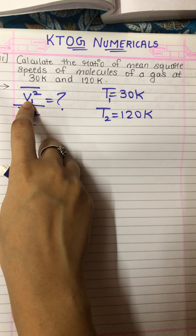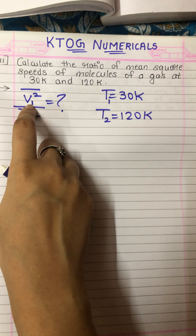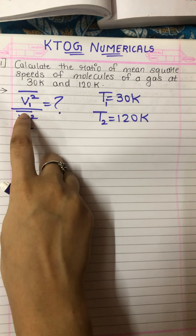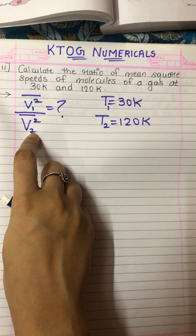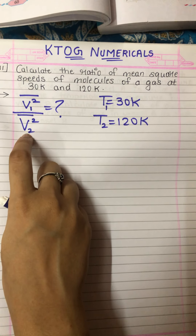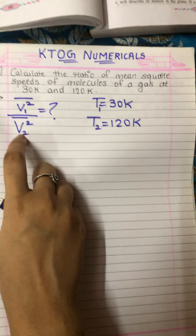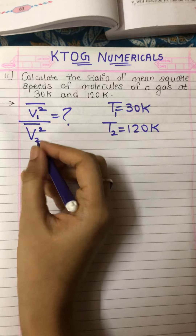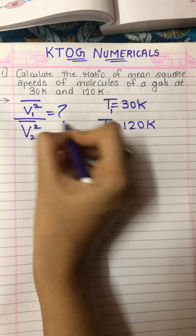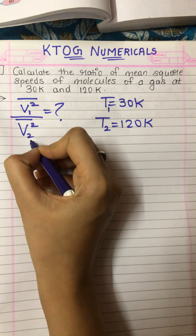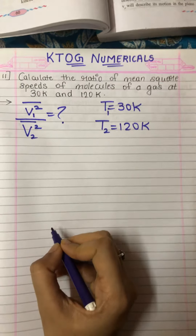So the mean square speed for the first gas, let it be V1, and the ratio of mean square speed of the second gas, let that be V2. We need the ratio of mean square speed of first gas upon mean square speed of second gas.